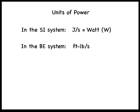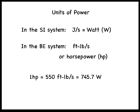The unit of power in the SI system is joule per second, or the watt given by W. In the BE system, it is the foot-pound per second, although the familiar horsepower, or HP, is commonly used to specify the power output of electric motors and car engines. The relationships between the various units are 1 horsepower equals 550 foot-pounds per second, which equals 745.7 watts.